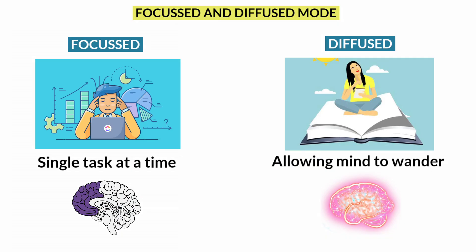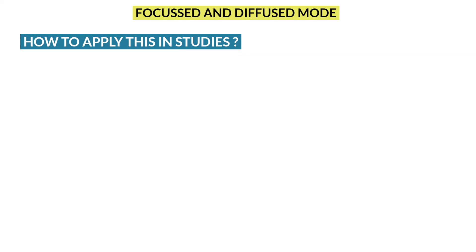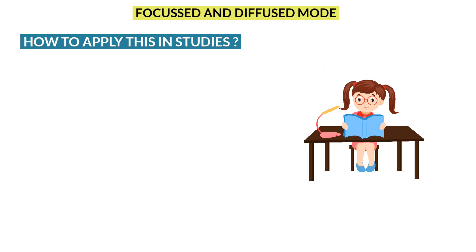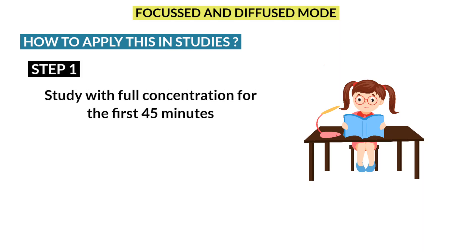I hope you understand these two modes of thinking. How to effectively apply these two modes of thinking in studies to perform better? For example, if you are studying a new chapter, follow these steps. Step 1: For the first 45 minutes, study with full concentration and avoid distraction. Please turn off your mobile and sit in a silent environment and start studying for 45 minutes.